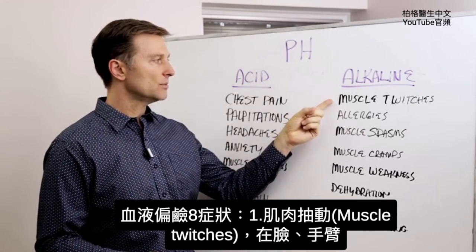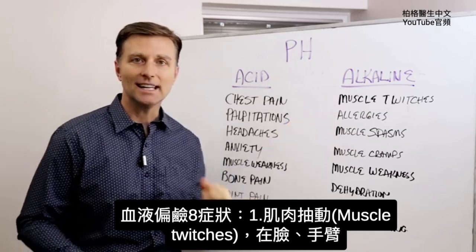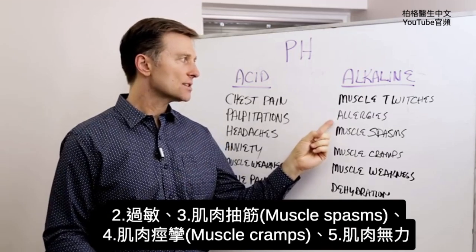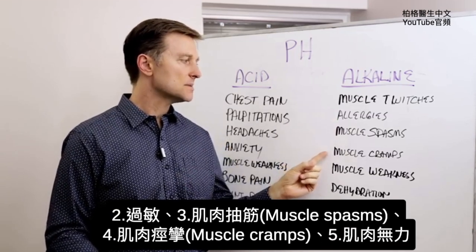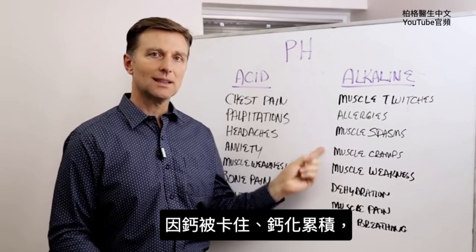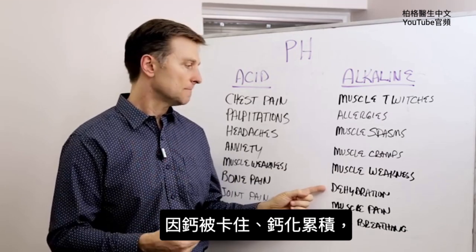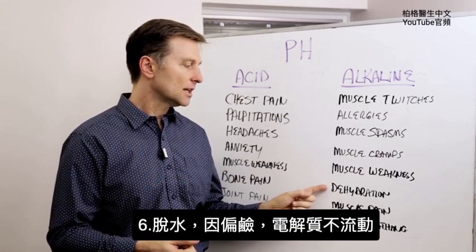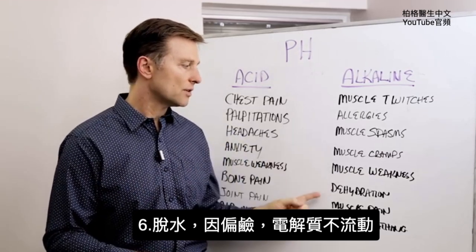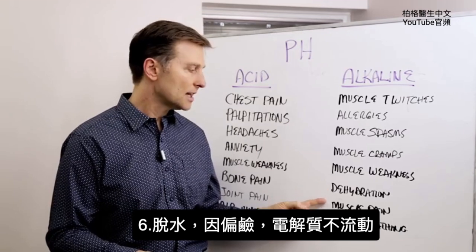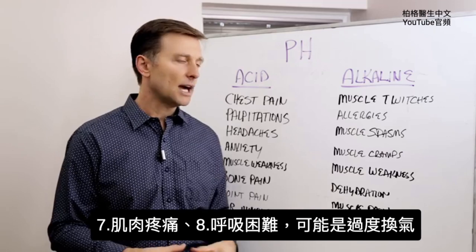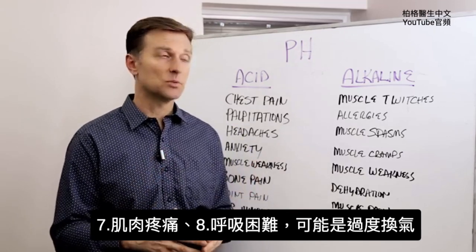And then excessively alkaline symptoms would be muscle twitches like tetany — that little twitch right here or on the arm — allergies, muscle spasms, muscle cramps, muscle weakness. Why? Because the calcium is all locked up. You're going to have calcium buildup too. Dehydration, because the electrolytes need to be hydrated correctly, and if the pH is off to alkaline you can't mobilize electrolytes. Also muscle pain and difficulty breathing — this might be more of a hyperventilation type of difficulty with breathing.